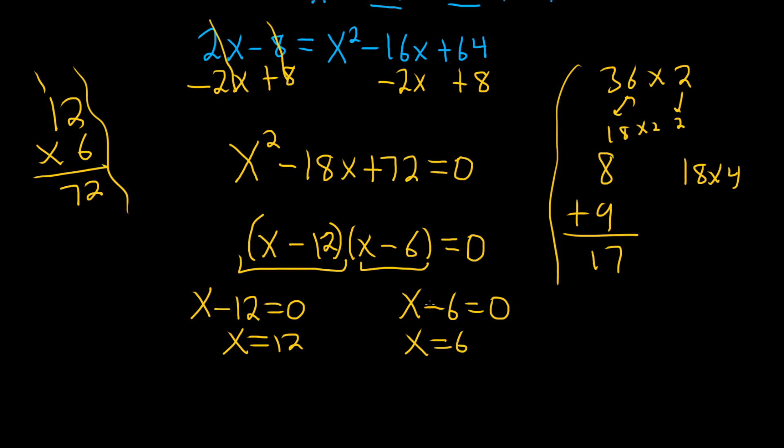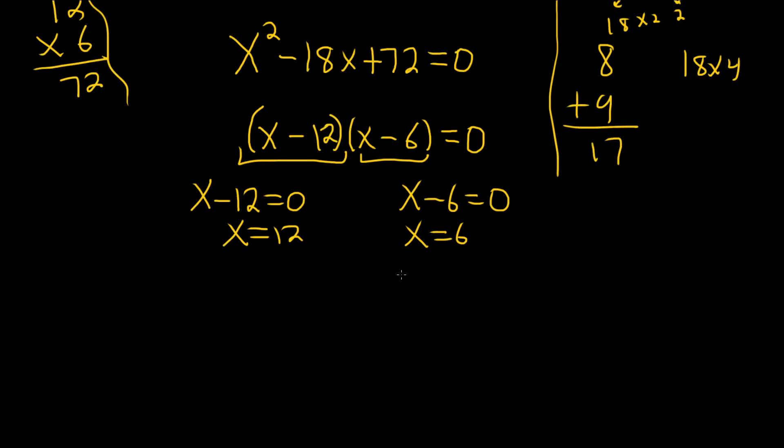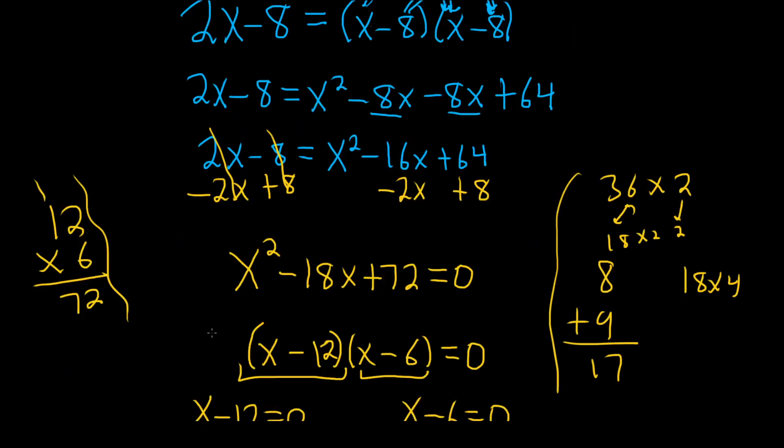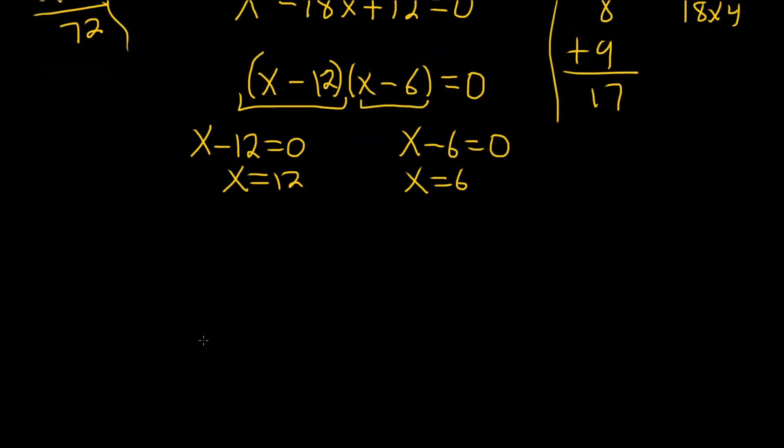So now we unfortunately do have to check these because some of these might not work. So here's our original question: x minus the square root of 2x minus 8 equals 8. So now we actually have to take these numbers and plug them in and check.